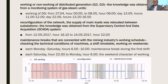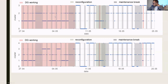The first condition is whether distributed generation is working or not. Then the reconfiguration — meaning somebody changed something manually, for example the welding machine was not supplied from the first transformer but from another. Then there is the maintenance break. The algorithm was sensitive to all these working conditions of the mining industry.